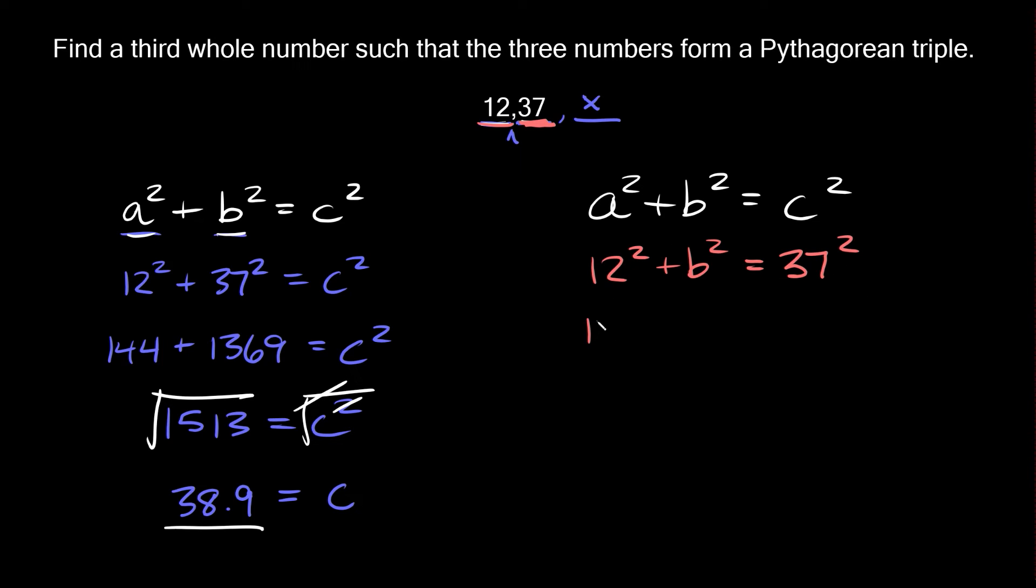Here we get 144 + b² = 1369. Now to solve for b² let's get rid of this 144, so we're left with b² = 1225.